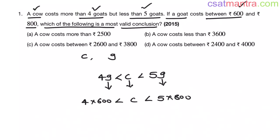So: 4 × 600 = 2400 < C < 5 × 800 = 4000. Therefore, a cow costs between 2400 and 4000 rupees.